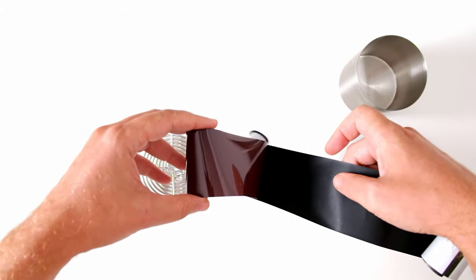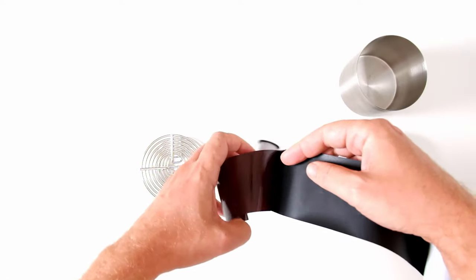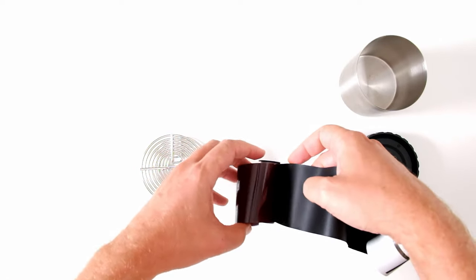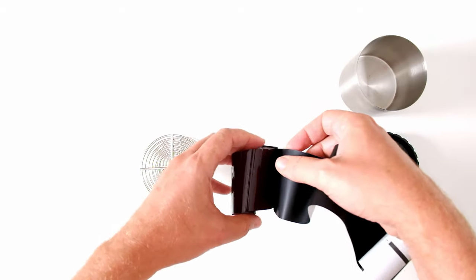And now you're going to unwind both at the same time, the backing paper and the film. Keep pulling them apart.